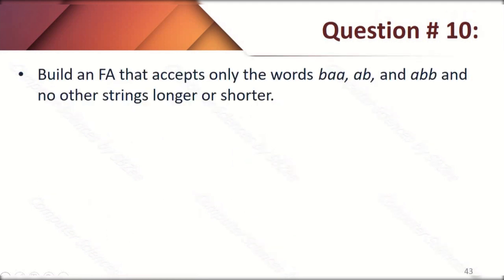Question number ten, part one: build an FA that accepts only the words 'BAA', 'AB', and 'ABD', and no other strings — longer or shorter. This question accepts exactly three words, similar to question seven which accepted two words. Here we accept three specific words and send all others into the dead state.